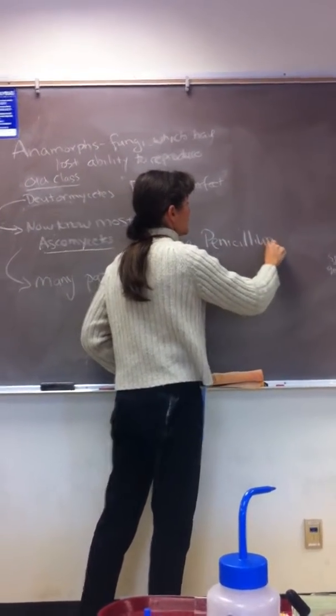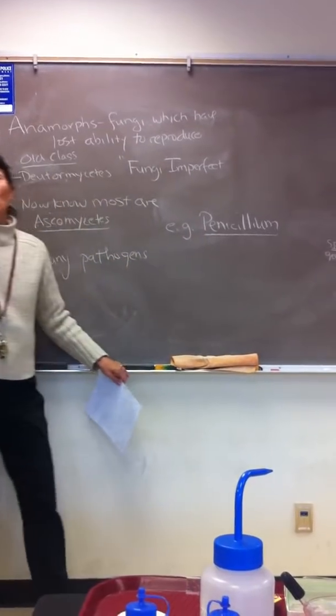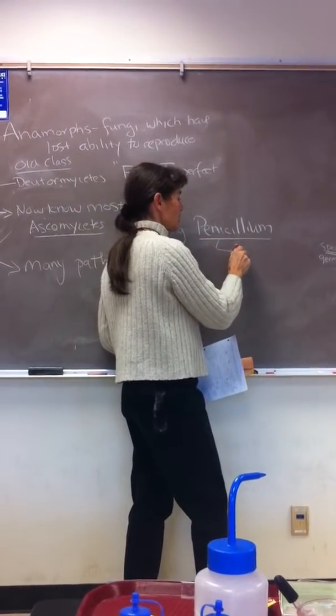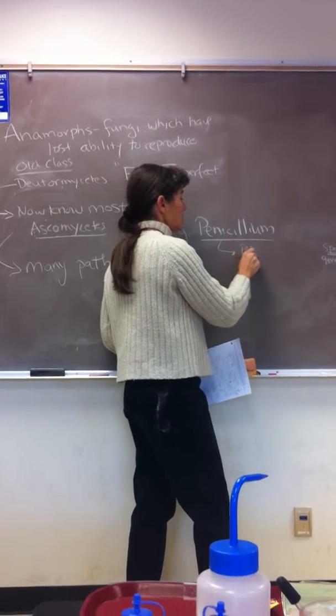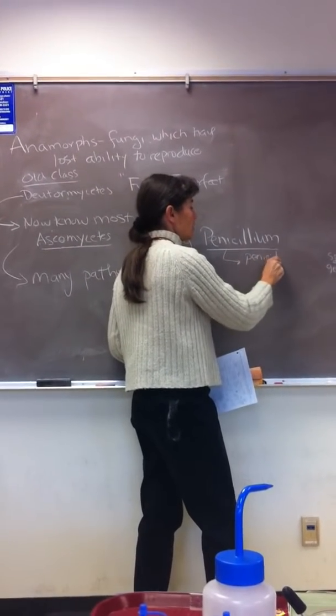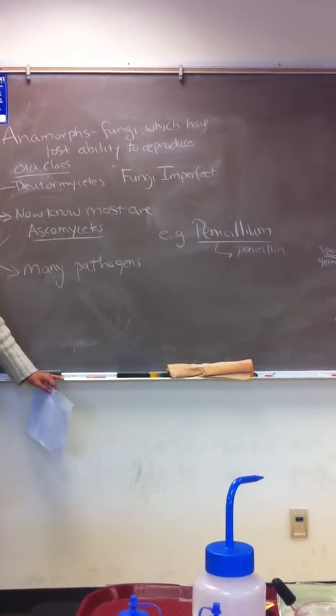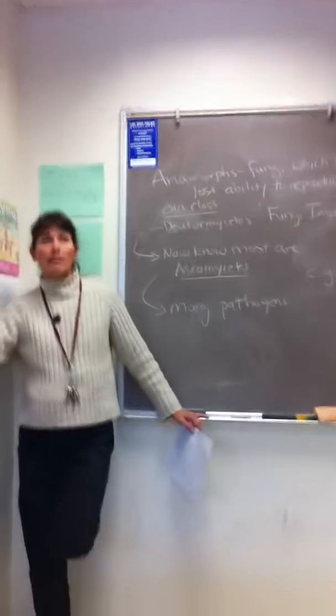Now, Penicillium is famous because it makes what? Penicillin. Right. This is the fungus, the mold, that Sir Alexander Fleming discovered makes the antibiotic penicillin, the first beta-lactam antibiotic, which knocks out which bacterial enzyme?